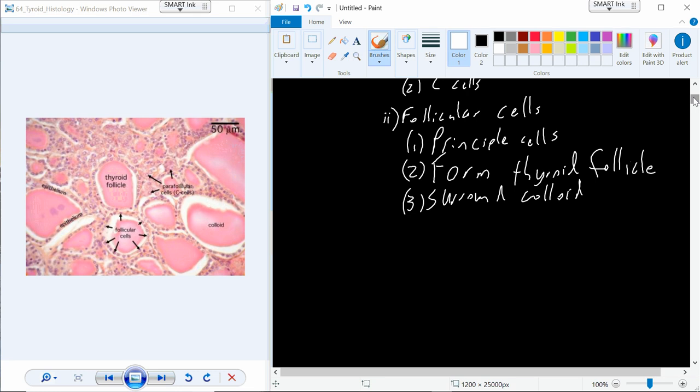Those are the two main cells. Calcitonin from the parafollicular cells, and then from the thyroid follicle we're going to see production of T3 and T4. But before we can do that, we have to understand a little bit of nutrition, and in particular consumption of iodine. So where do I get iodine from in my diet? We iodize our salt. You can actually buy non-iodized as well. Why do we iodize our salt? Because we need to consume iodine to maintain thyroid function and thyroid health.